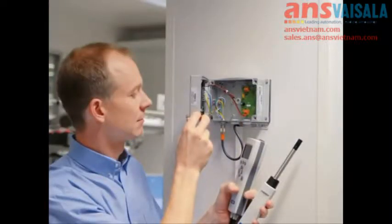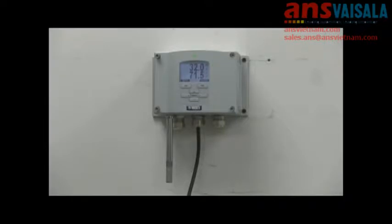This video will show you how to perform a one-point humidity calibration of a Visila HMT331 wall mount transmitter using a recently calibrated HM70 handheld as your reference. This procedure is done in five easy steps.